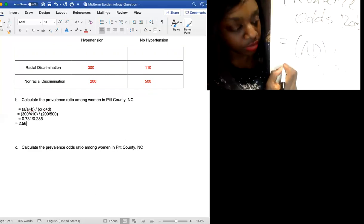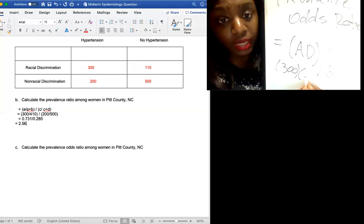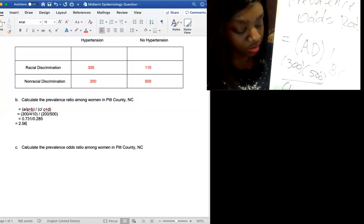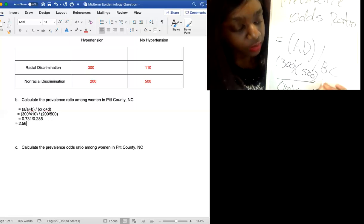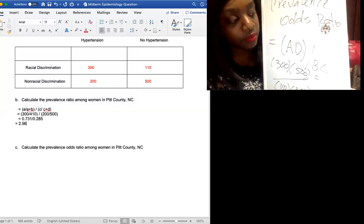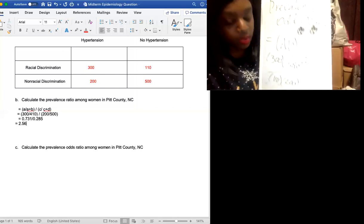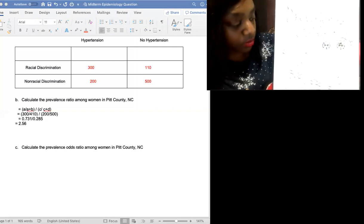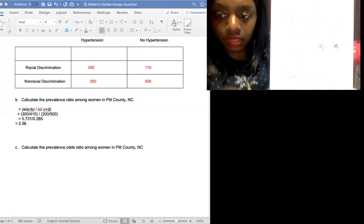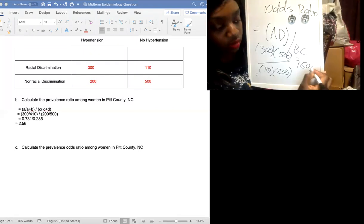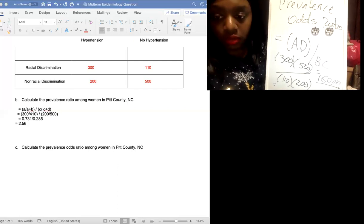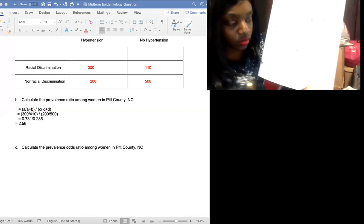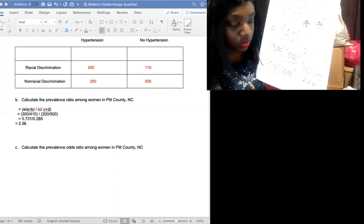It'll be multiplied by 500. We're going to do a plug and chug. And then multiply it across. So it'd be 300 times 500. That's 150,000 right here. And then we have our 110 times 200. 22,000. So let's do that. 150,000 divided by 22,000.